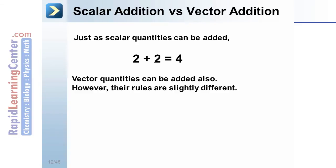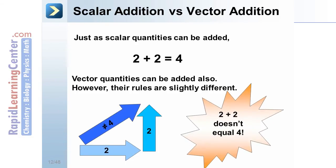2 plus 2 does not equal 4 for vectors. This may seem a little strange, but don't forget to consider the directions.